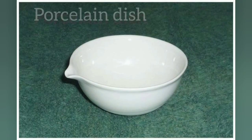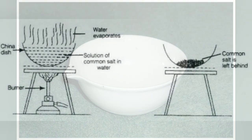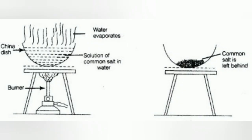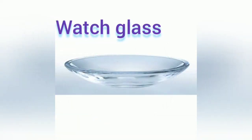A porcelain dish is an open and shallow container like a bowl made of porcelain. It is used for evaporating liquids or concentrating solutions. It can absorb a large amount of heat without breaking. It is also called a china dish or evaporating dish.